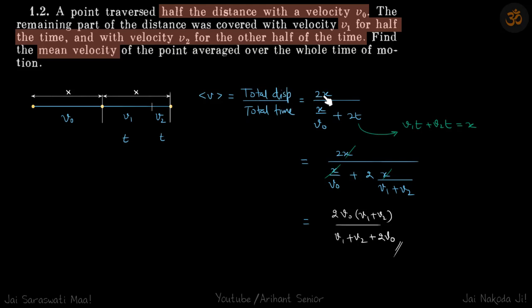Total displacement is 2x. Total time is the time taken in the first half, which is x by v0, plus 2t. How do we find t? v1t plus v2t equals the total second half distance, which is x. From here we replace the value of t and simplify. The terms of x will get cancelled and we will get our answer.